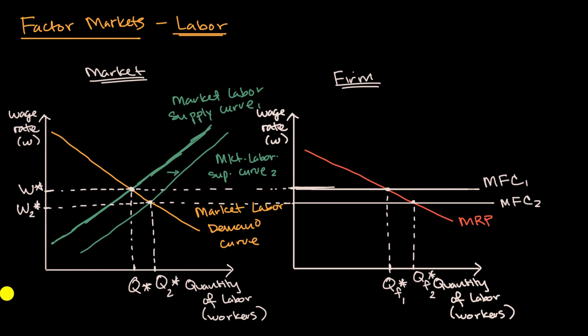Now let's think about the other way. Let's imagine that you have net migration out of a country. What would happen to the market labor supply curve? Well, in that situation, we would shift to the left, like this, at a given wage, there would be fewer people that are willing to work.